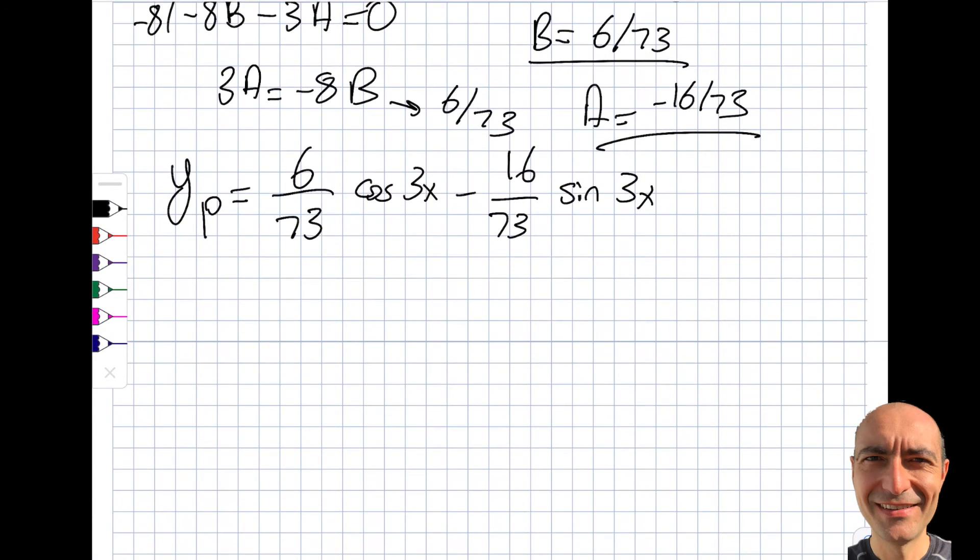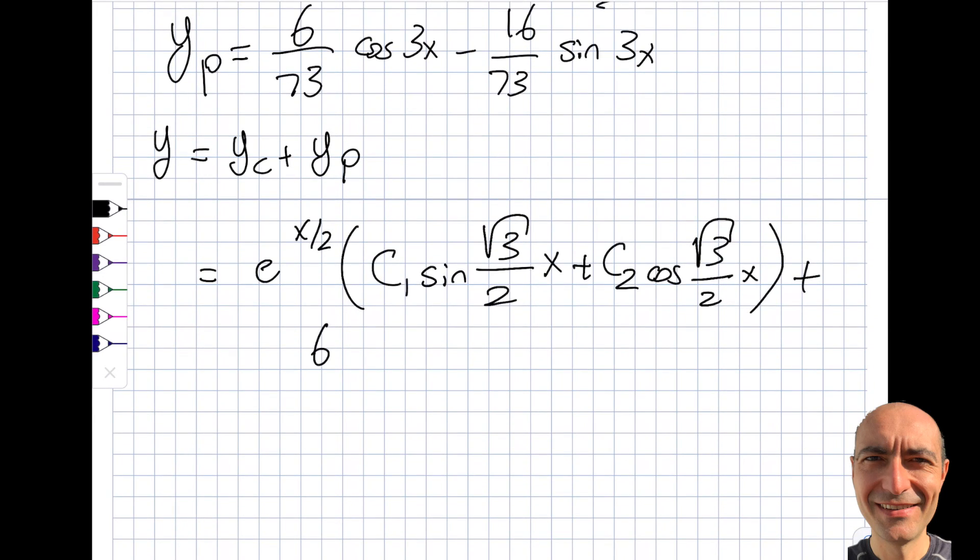So that will be my yp, and the total or the general solution will be the summation of the yc plus yp, where yc was e to the x by 2. I was first seeing that, I was saying that yc was not nice. After I see what yp was, well, now, relatively speaking, this looks fairly manageable. Cosine of square root of 3 by 2x, plus, now I have to write yp over here, 6 by 73 cosine 3x minus 16 by 73 sine 3x.